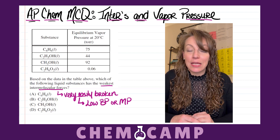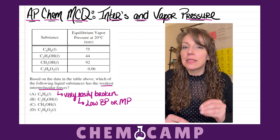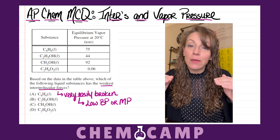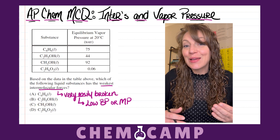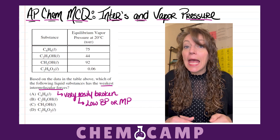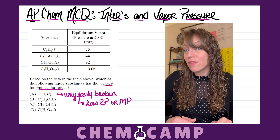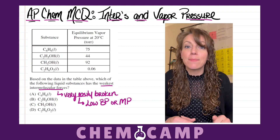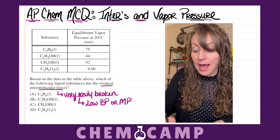Another piece of lab data you can look at to determine the strength of intermolecular forces is vapor pressure — though it works a little differently. At the surface of any liquid, those molecules are able to escape the liquid state and enter the gaseous state — that's called evaporation. Those molecules in the gaseous state exert pressure down on the surface of the liquid, and the more molecules that escape, the higher the vapor pressure. So if a substance has very weak intermolecular forces, more molecules will escape to the gaseous state, resulting in a high vapor pressure. A high vapor pressure is therefore a good indicator of weak intermolecular forces.